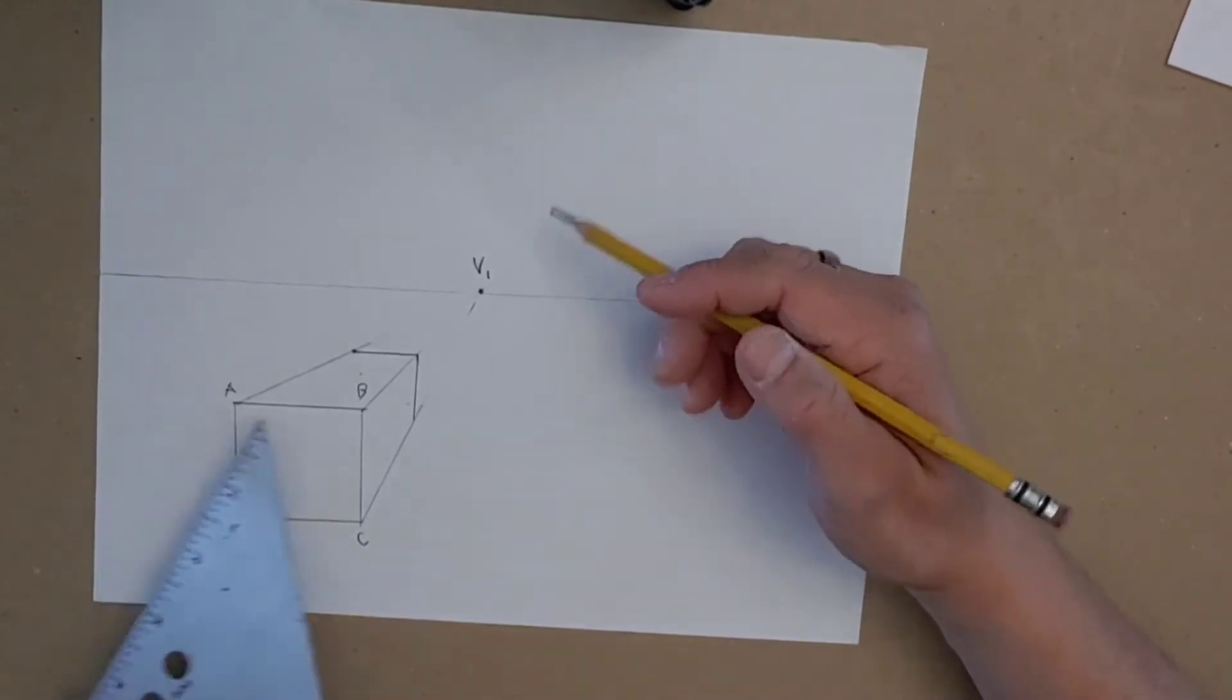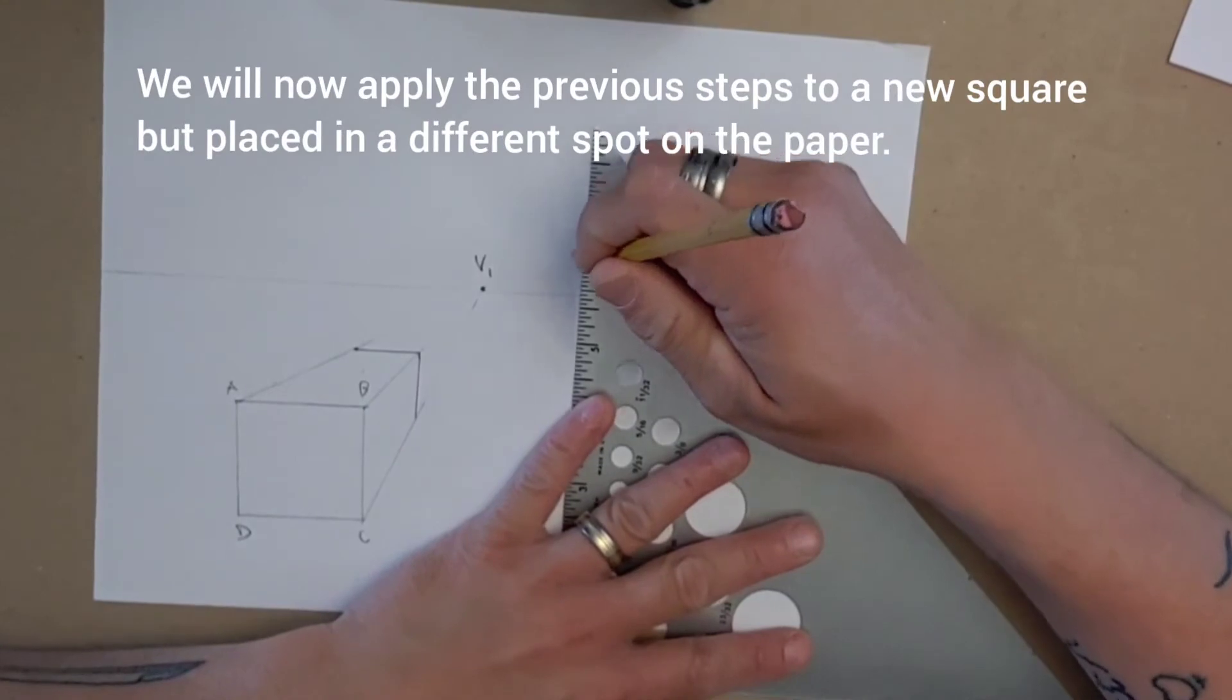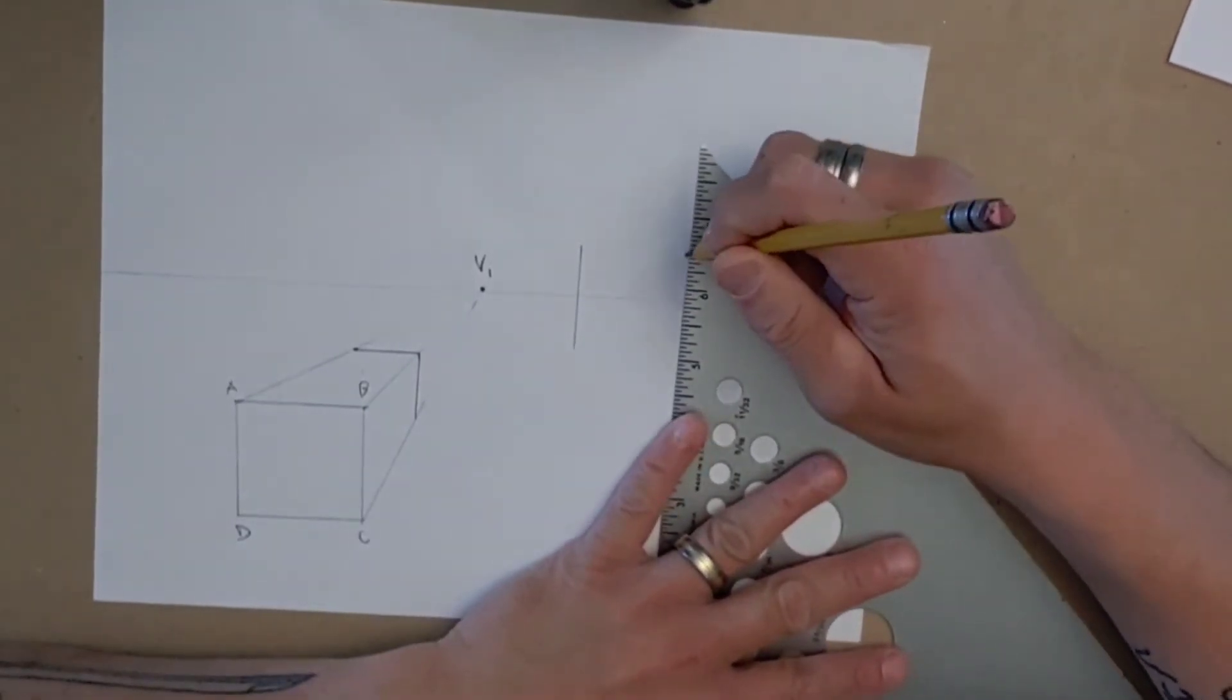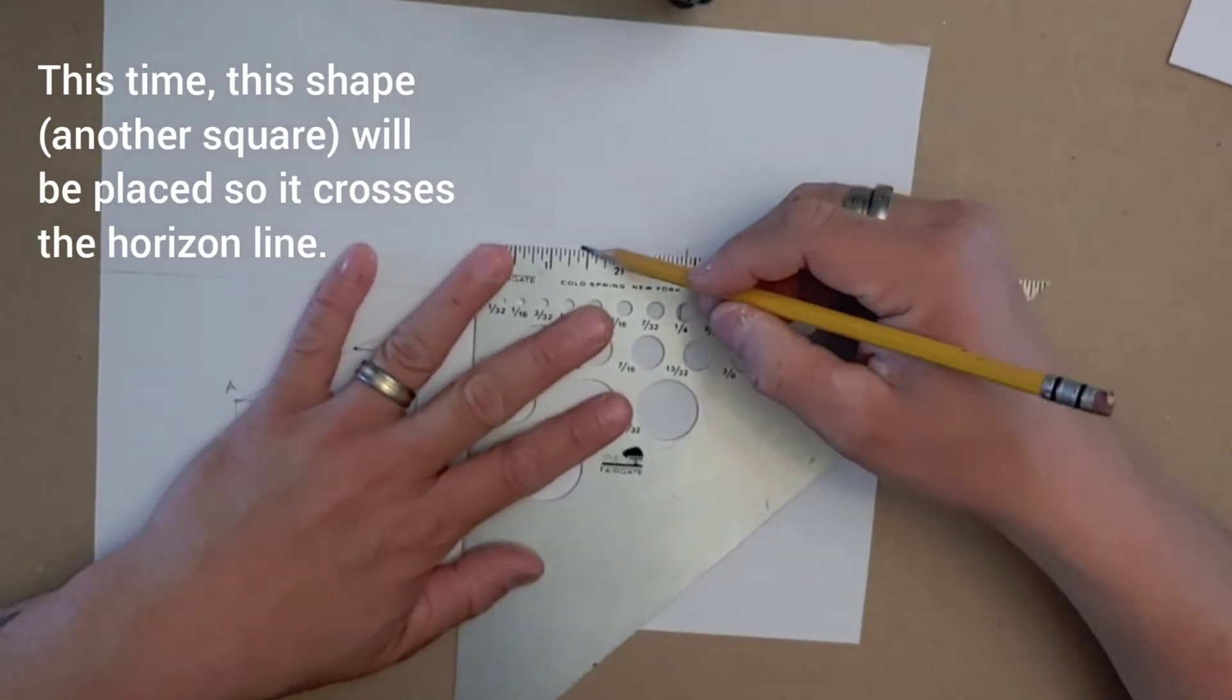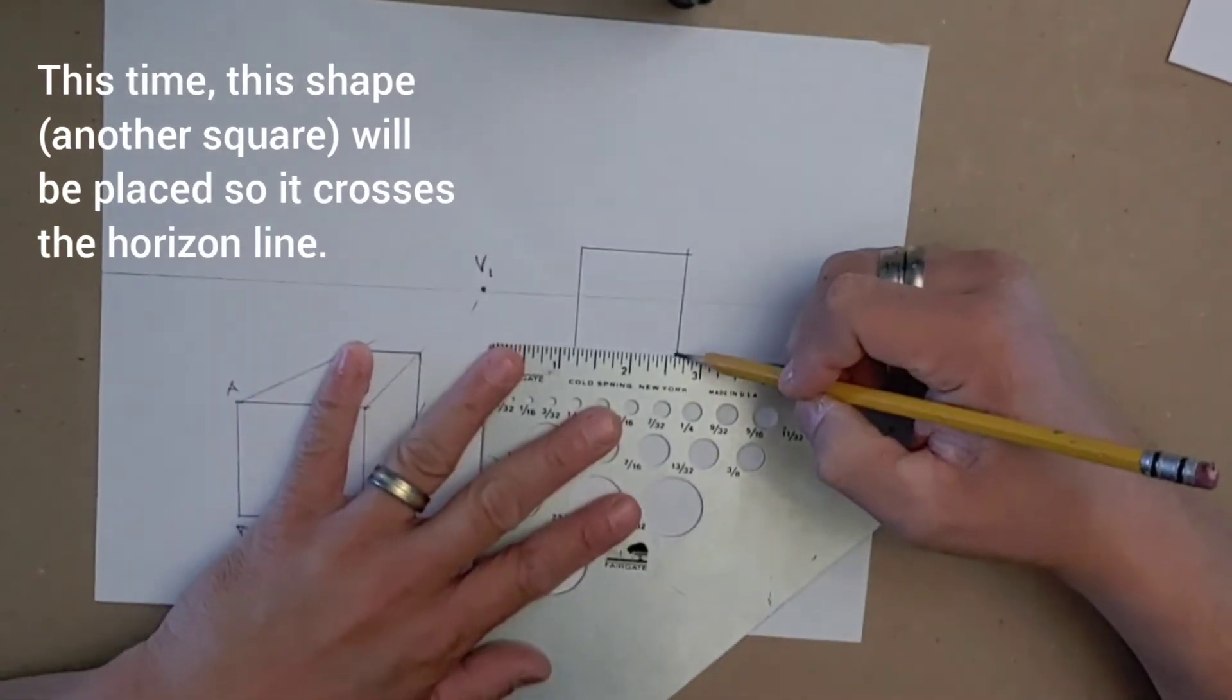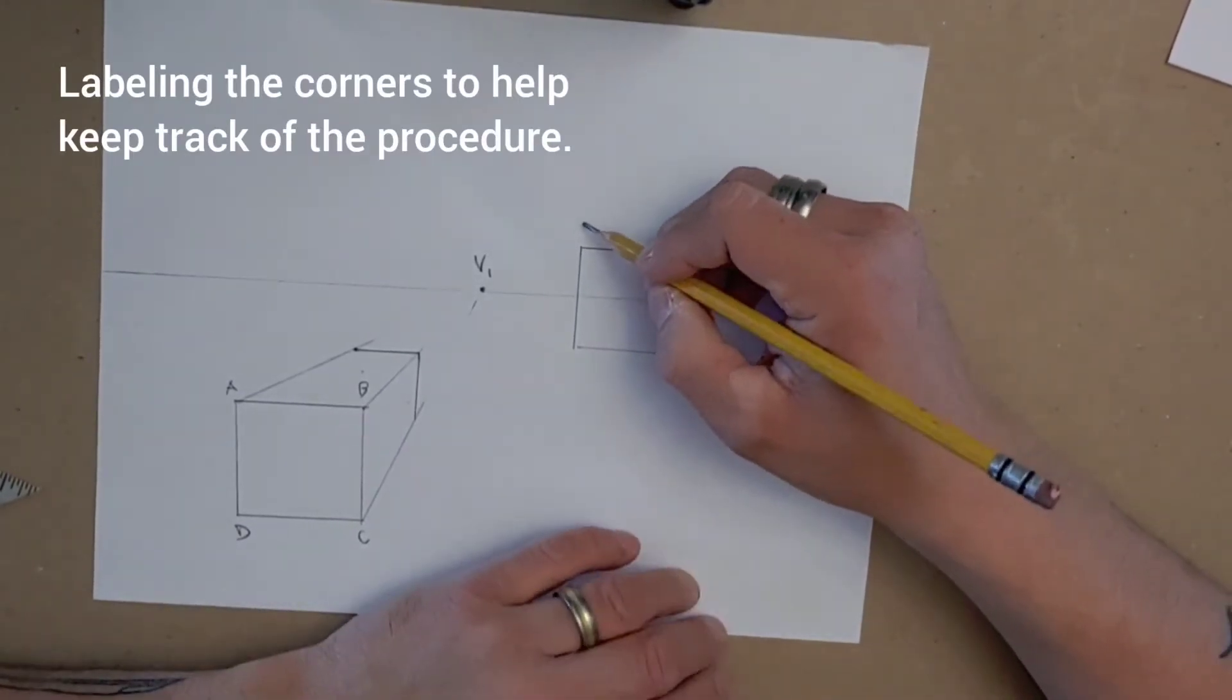I can do this in different spots. If I do a box that's now crossing the horizon line. So I'll draw one side of the box, the other side of the box. I'll draw the top of that shape and the bottom of that shape.